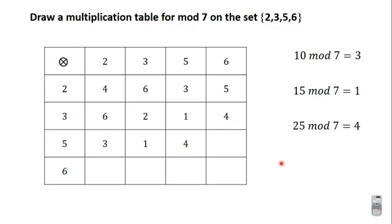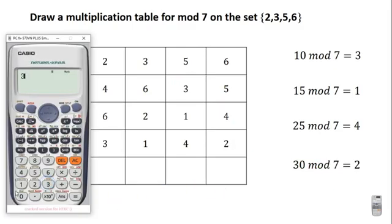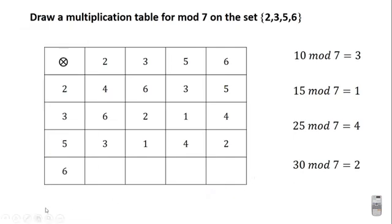5 × 6 is 30, and 30 mod 7 is 2. You subtract 7 from 30 to get 23, then 7 from 23 to get 16, then 7 from 16 to get 9, then 7 from 9 to get 2. So 30 mod 7 is 2.